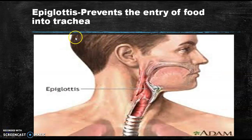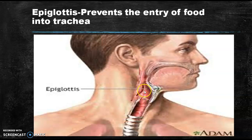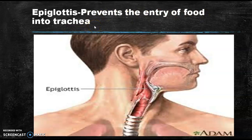The next important term is epiglottis. You can see the epiglottis structure — it is a lid-like structure that covers both the trachea and esophagus. There is a lid above the trachea and esophagus. The role of the epiglottis is to prevent the entry of food into the trachea — that is its main function.